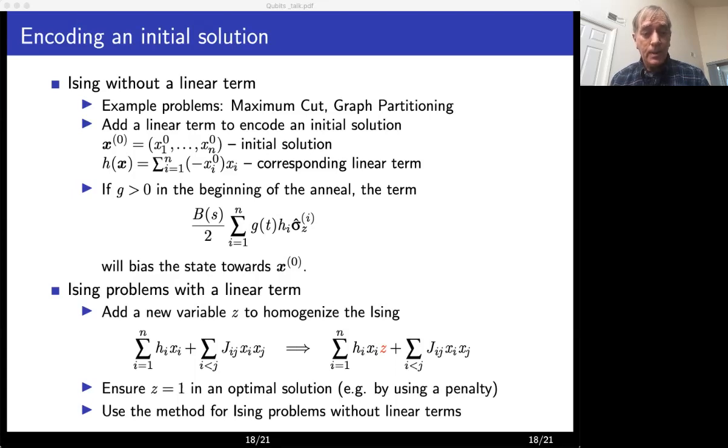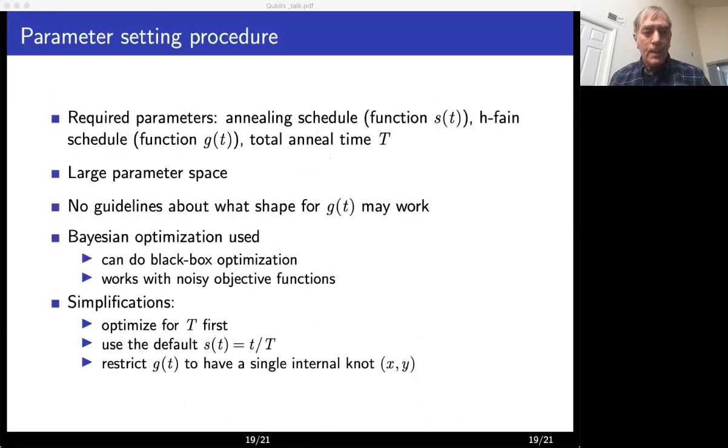But what if there is a linear term in the original problem and most problems do have linear terms? Then we convert it into a quadratic one, the linear term, by multiplying it by a new variable z. So we want that variable z to take eventual value plus one in optimal solution. So this transformed problem will be equivalent to the original one. And we can enforce that by using a penalty. Once we do that, then we use the method for Ising problems without linear terms that we discussed earlier.